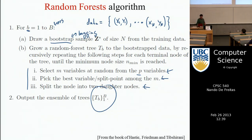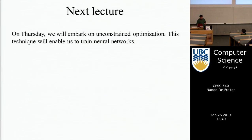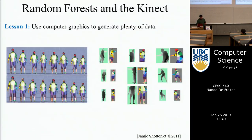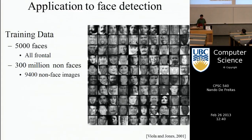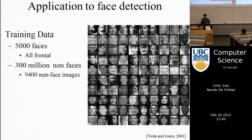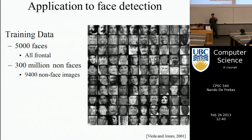That's a high-level summary of random forests from last time. Today I'm going to talk about what type of features you would use for a real application. First, I'll cover face detection by Viola and Jones — a fairly famous paper in computer vision from 2001. They actually used boosting in that paper, but I'm going to describe essentially the same thing with random forests, and it's almost the same.